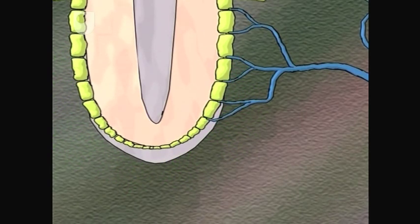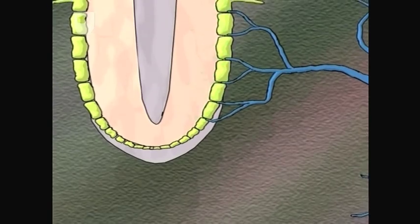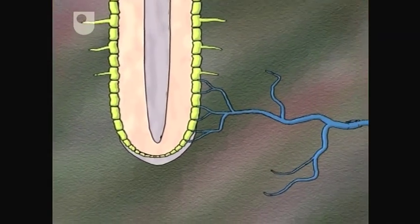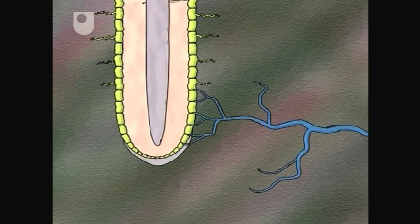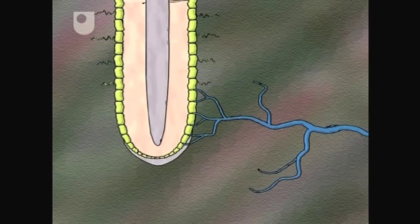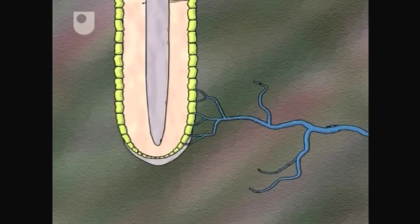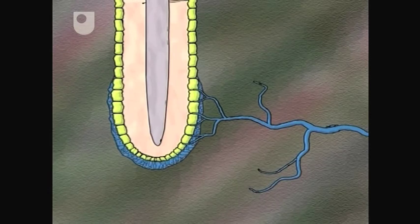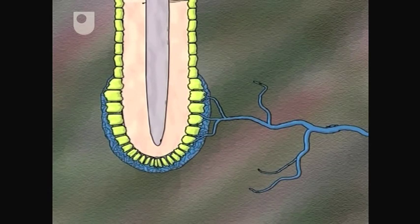Now it's the turn of the fungus to release a chemical. It in turn communicates with the plant. In response, the plant switches off its natural defences and the root hairs, now redundant, disappear. The fungus has now been recognised. The stage is set for the formation of a fully-fledged mycorrhizal partnership.